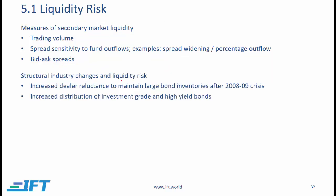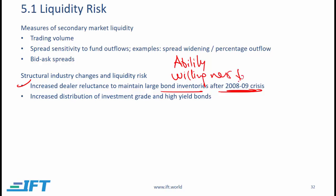Regarding structural industry changes and liquidity risk, there are two broad points. First, increased dealer reluctance to maintain large bond inventories. After the 2008-2009 financial crisis, new regulations reduced dealers' ability to maintain large bond inventories. In the United States, the Volcker rule restricted dealers' ability to take risk, hold inventories, and engage in trading activities that would have supported the bond market. Even dealer willingness declined as bond dealers became more risk averse, resulting in a decrease in liquidity.